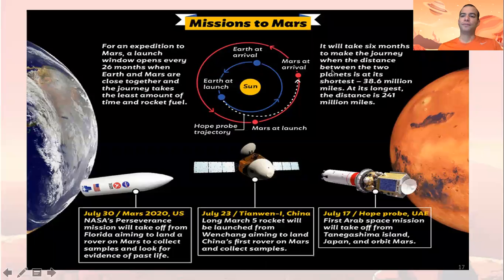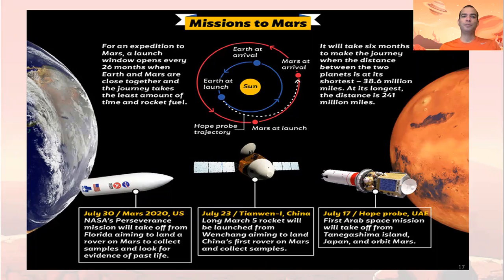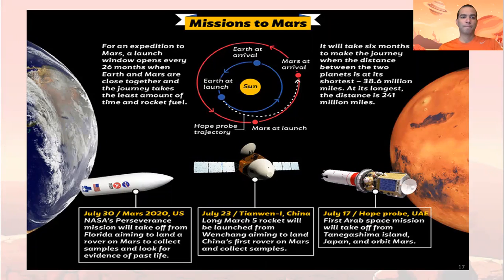To finish this section, we will review the Mars mission in 2020. There were three missions going to Mars. During 2021, these missions arrived at the red planet. The names of these three missions are Hope Orbiter, Tianwen 1, and Perseverance.